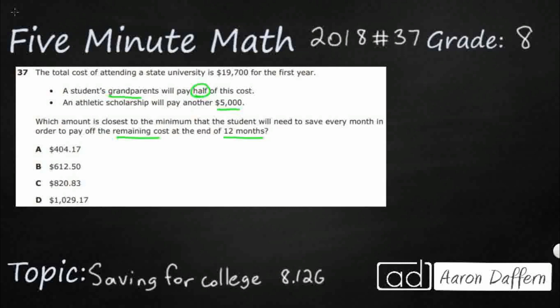Alright, so that's quite a bit there. So let's figure out what our three big chunks are. Okay, so we get the grandparents, they are going to pay for half, a scholarship, which is good for this person. Scholarships are great, you don't have to pay them back. That's $5,000. And then we get a 12-month savings and that's what we are really looking for.